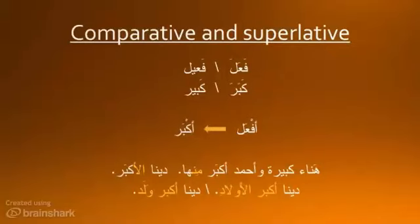Let's look at the line below: دِينَا أَكْبَرُ الْأَوْلَادِ. What structure is this? It's an إضافة. So دِينَا is 'the oldest of the children' — in other words, the oldest child. Another way to say this is دِينَا أَكْبَرُ وَلَدٍ.